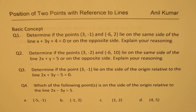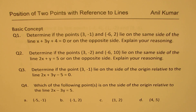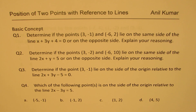Question three: determine if the given point lies on the same side as the origin relative to the line 2x + 3y - 5 = 0. You can interpret this using the solution of the first and second questions. Question four is a multiple choice question: which of the following points is on the side of the origin relative to the line 2x - 3y = 5?